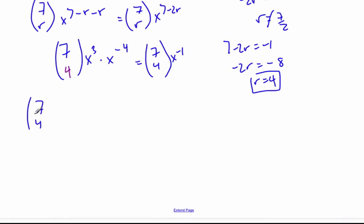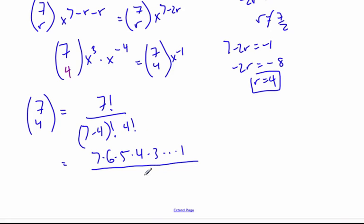Well, 7 choose 4 is 7 factorial over 7 minus 4 factorial over 4 factorial, which is 7 times 6 times 5 times 4 times 3, and so on, down to 1, over 4 times 3 times 2 times 1, over 3 times 2 times 1, because this is 3 factorial. Canceling this out, canceling that out, there's 6, there's 6. And so I know this is equal to 35.